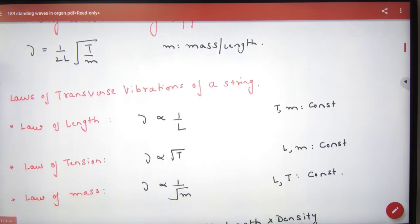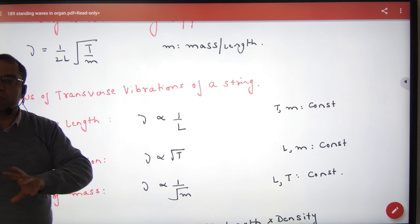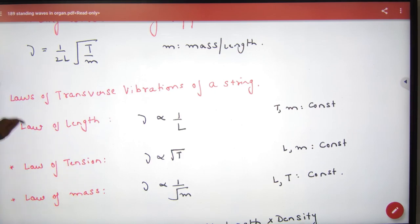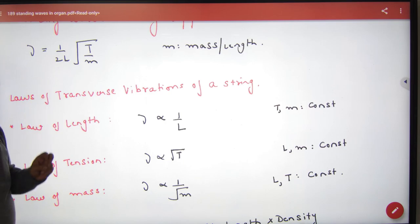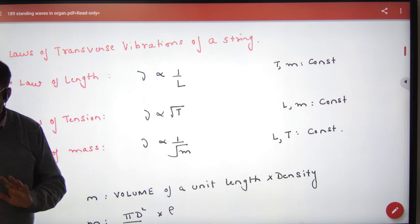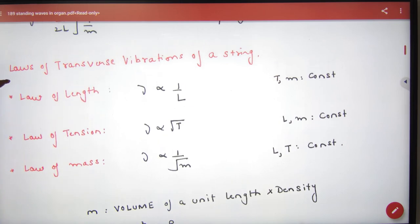In your books, some laws are given - laws of transverse vibration of a string. In which it is shown that frequency is inversely proportional to length, the other factors being constant. Frequency is directly proportional to square root of tension and inversely proportional to square root of mass per unit length. This is called law of length, law of tension, and law of mass.